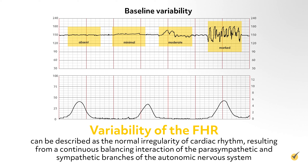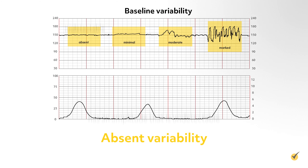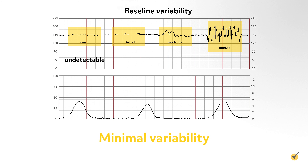An alternative is the biophysical profile, or BPP, which includes an NST and also uses ultrasound to measure fetal breathing movements, gross body movement, fetal tone, and amniotic fluid volume.